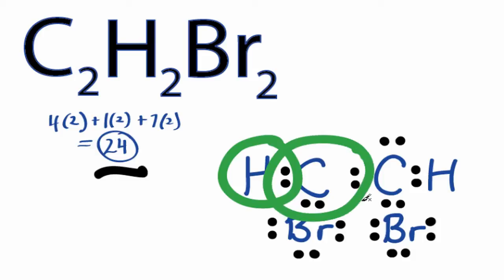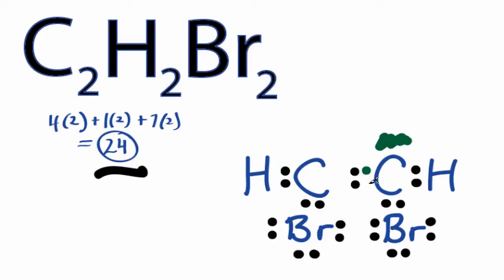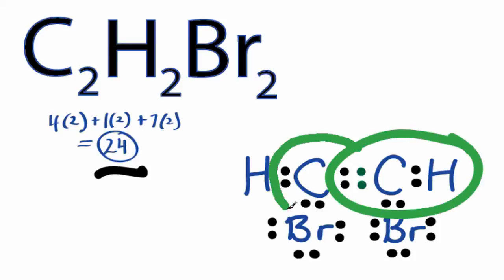It only has 6, so we're going to have to share electrons to form a double bond to fulfill the octets. Let's take these 2 valence electrons here and move them to the center, share them. We're still only using 24 valence electrons, but this carbon has 8 valence electrons, and now this carbon here has 8. Its outer shell is full as well.